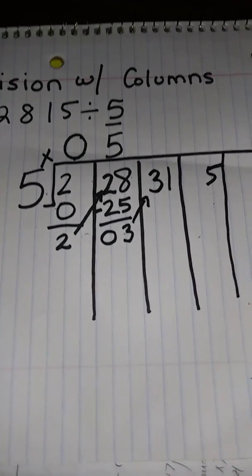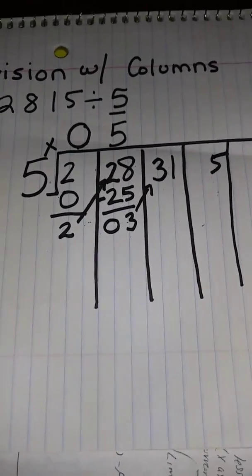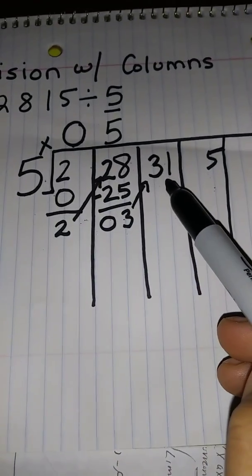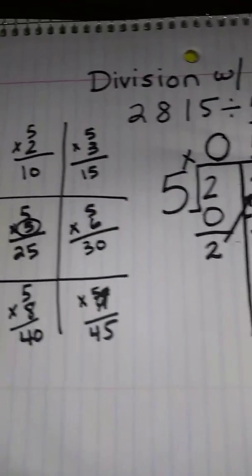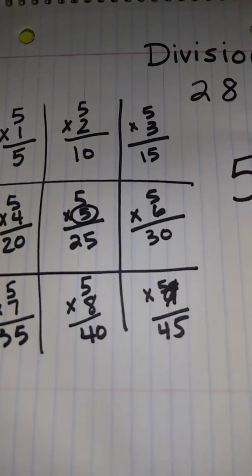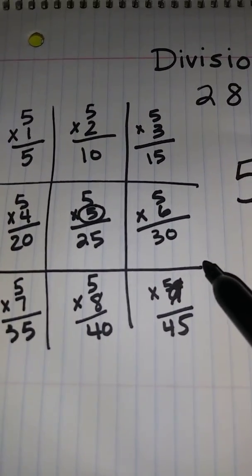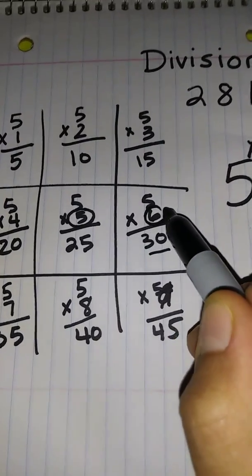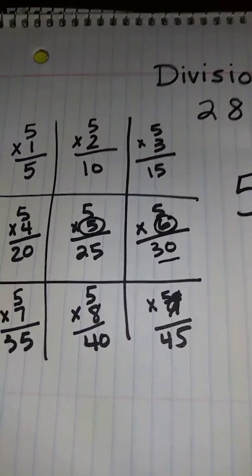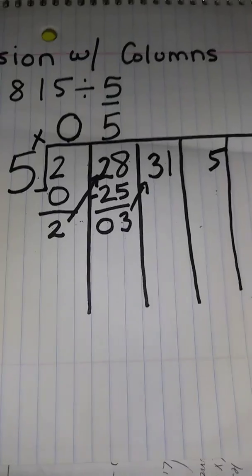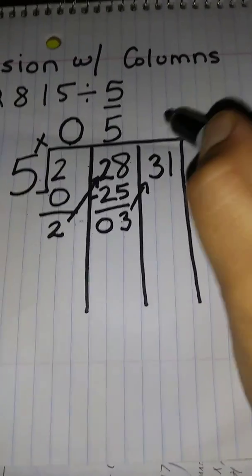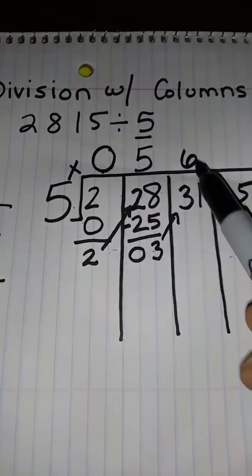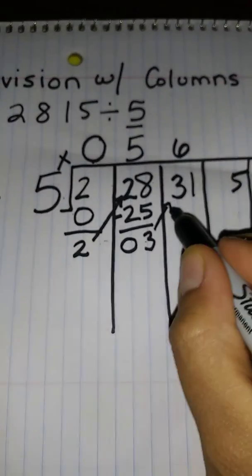So it's very similar to long division just slightly different. So now I'm looking to multiply 5 into the number 31 without going over. So let me find my product closest to 31. It's going to be 30 but the number I'm going to write is going to be the 6 because I'm multiplying 5 by 6 to get to 31.